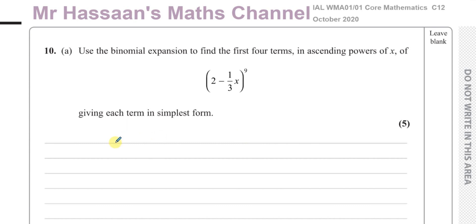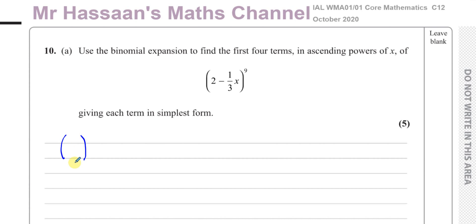The origin of the NCR method is basically looking at the pattern of coefficients you get when you expand brackets, and realizing there's a certain pattern — then using the NCR button, which gives us the numbers in Pascal's triangle. We don't need to go into the details of that. All we need is how to use the NCR button to find the coefficients. I like to make one row for each term, with three brackets: one for the NCR coefficient, one for the first term, and one for the second term.